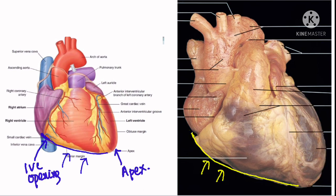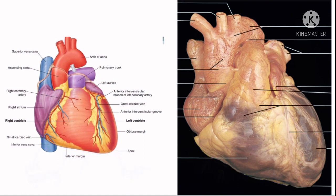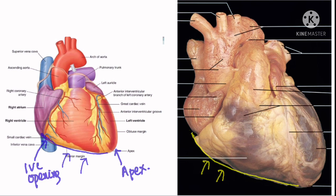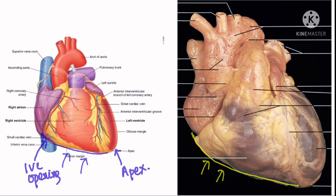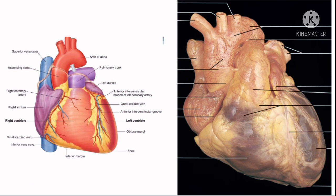The inferior border is nearly horizontal and extends from the opening of the inferior vena cava to the apex of the heart. It is formed by the right ventricle, with the right atrium also forming a part of this border. The inferior border separates the sternocostal surface from the diaphragmatic surface. Near the apex it presents a notch known as incisura apicis cordis.